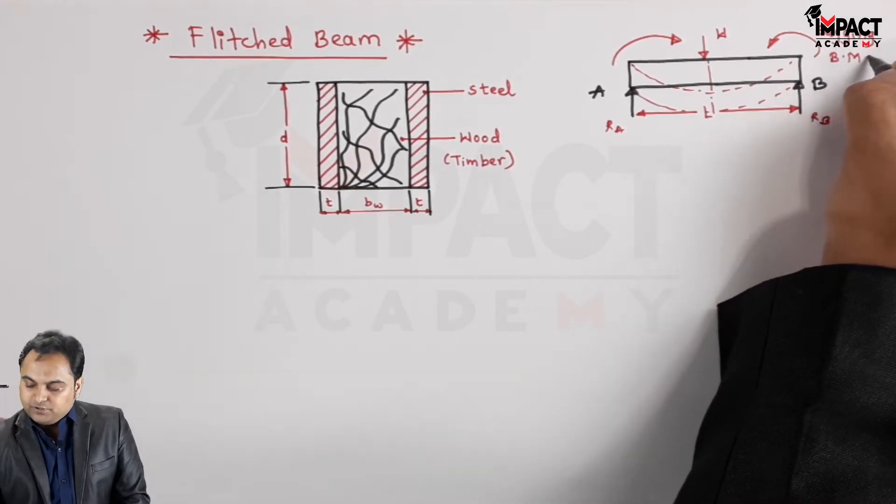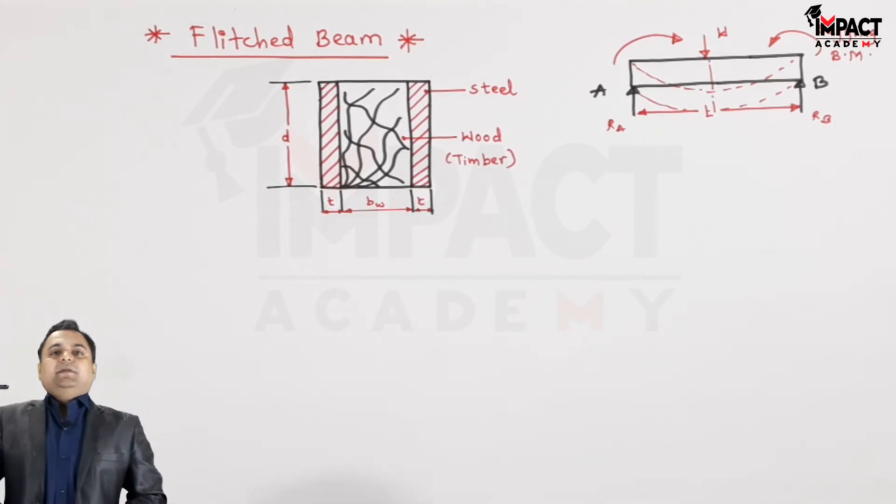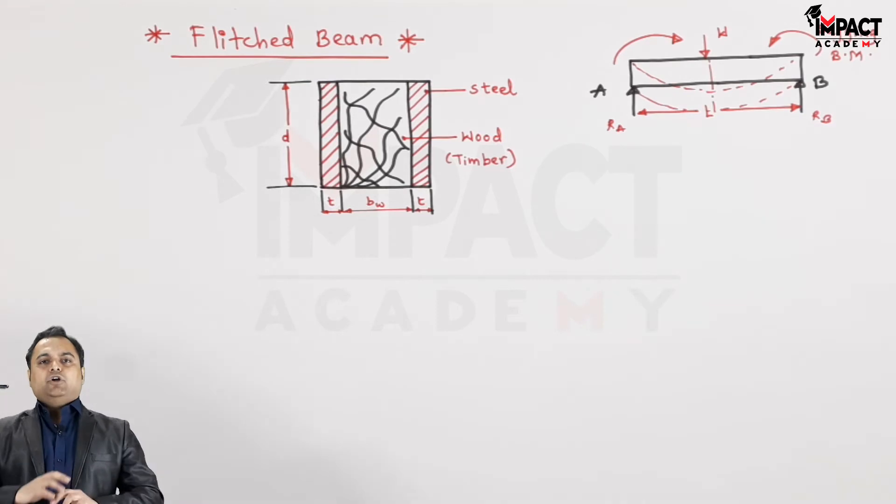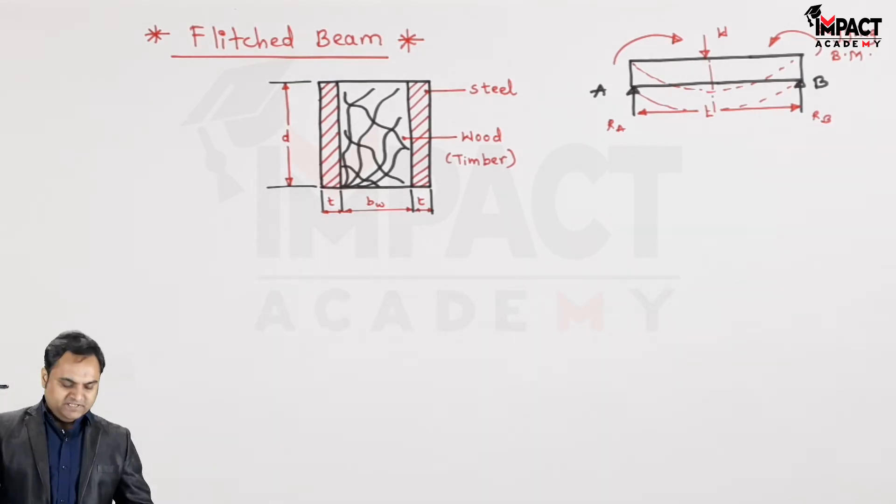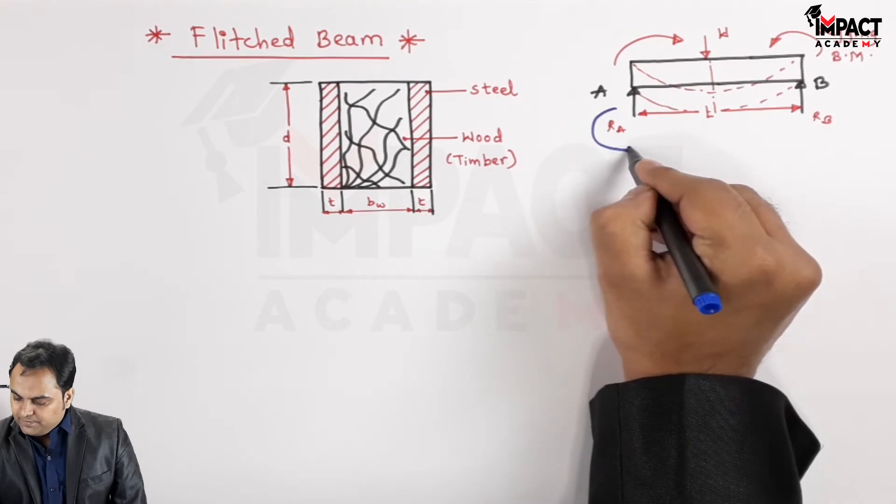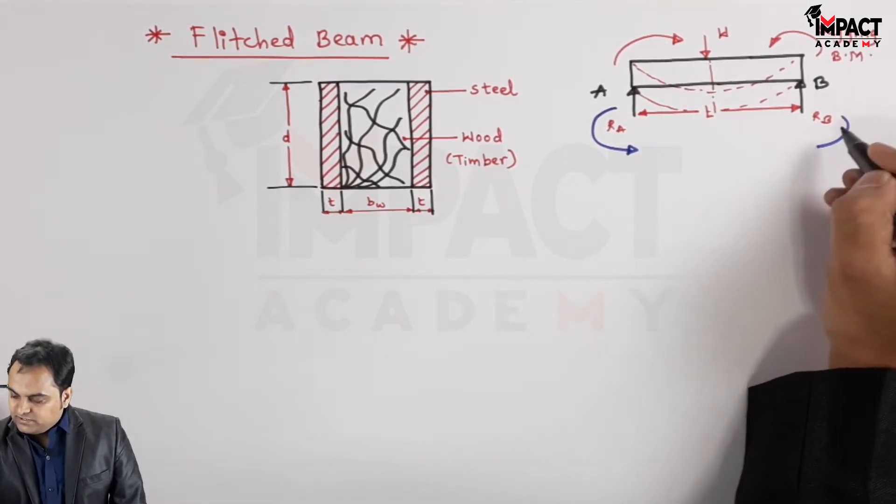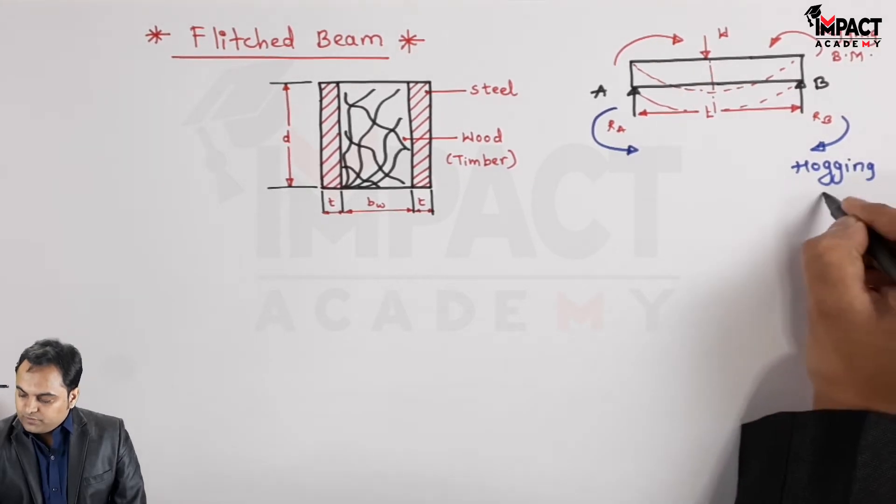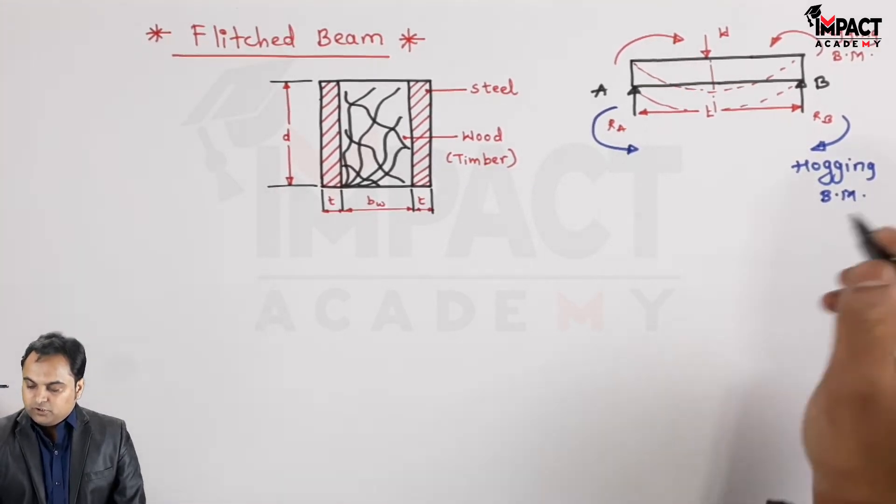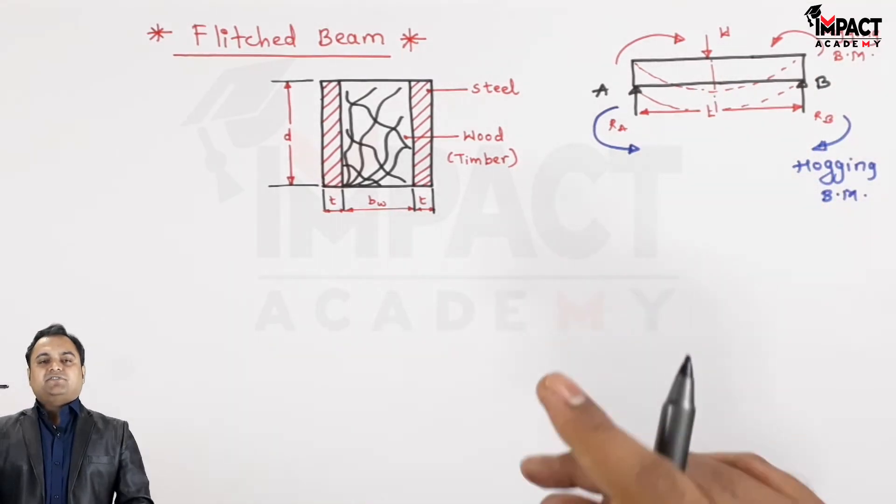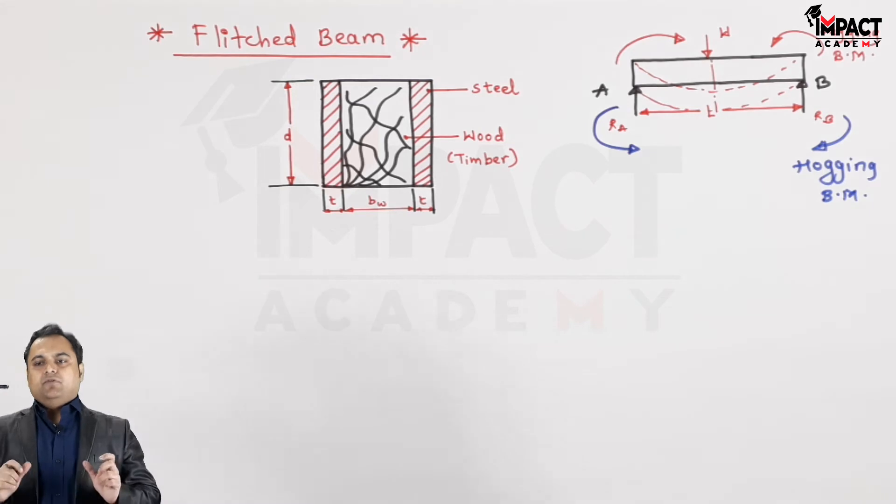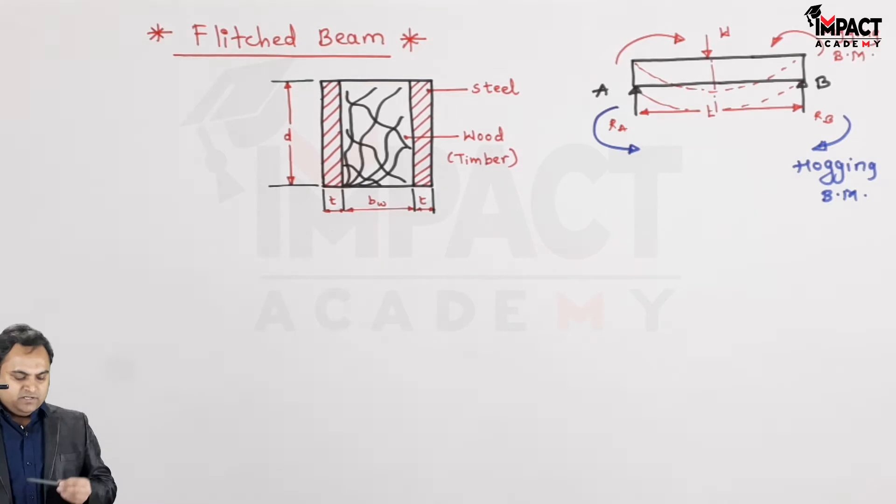The sagging bending moment. So the material of the beam should be such that it should resist this sagging bending moment. Opposite to sagging is the hogging bending moment. So hogging bending moment would be somewhat like this, that is opposite of the sagging bending moment. Sagging bending moment is trying to bend the beam, whereas hogging bending moment is trying to offer the moment from the opposite direction.